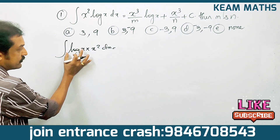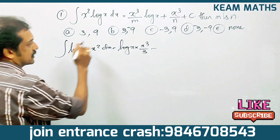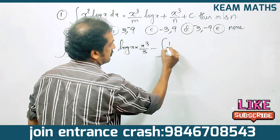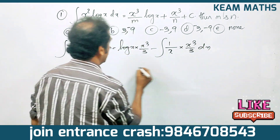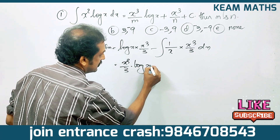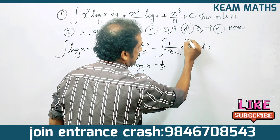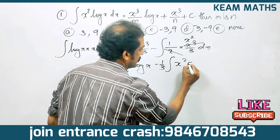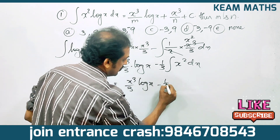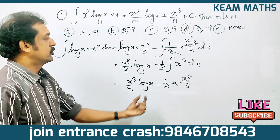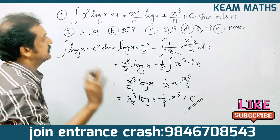Using integration by parts: product of 1st into integral of 2nd — that is log x into x³ by 3 — minus integral of derivative of 1st, which is 1 by x, into integral of x², that is x³ by 3, dx. That gives x³ by 3 into log x minus 1 by 3. We cut x, and get x². So the result is x³ by 3 log x minus x³ by 9 plus c.